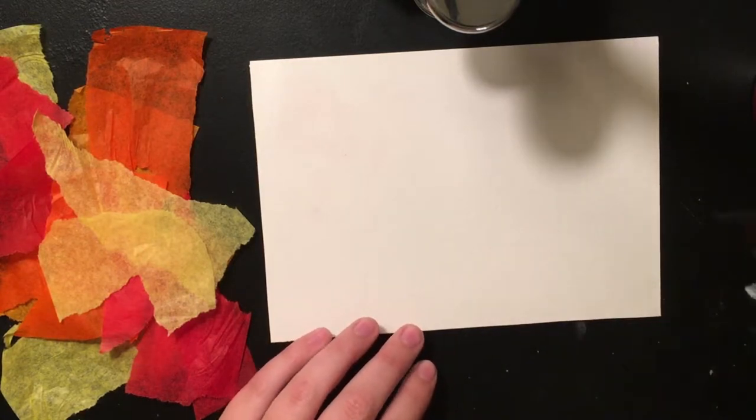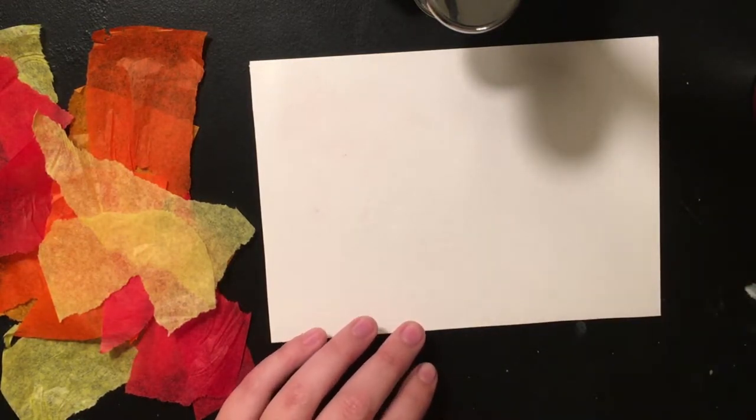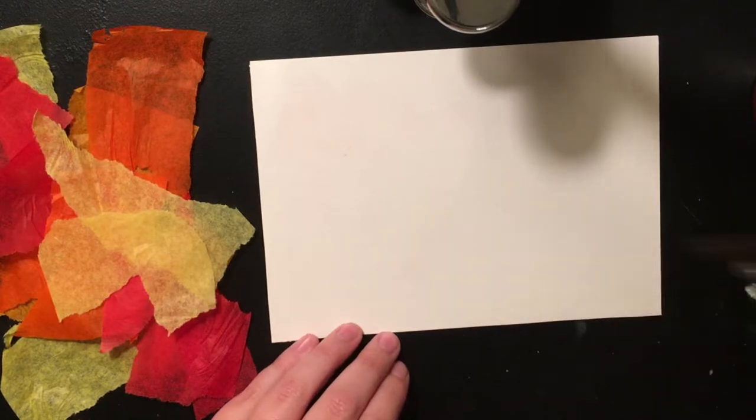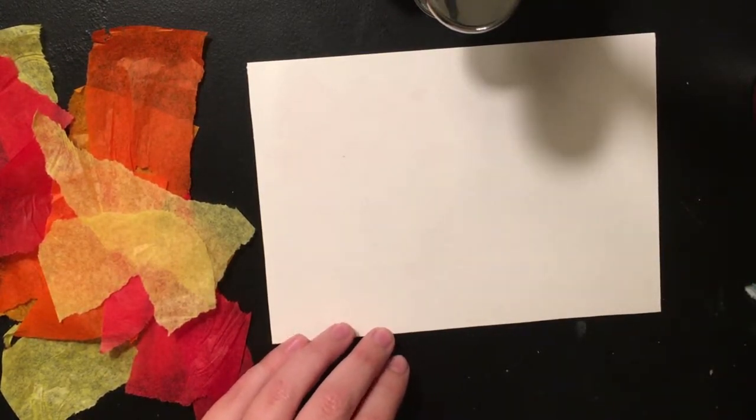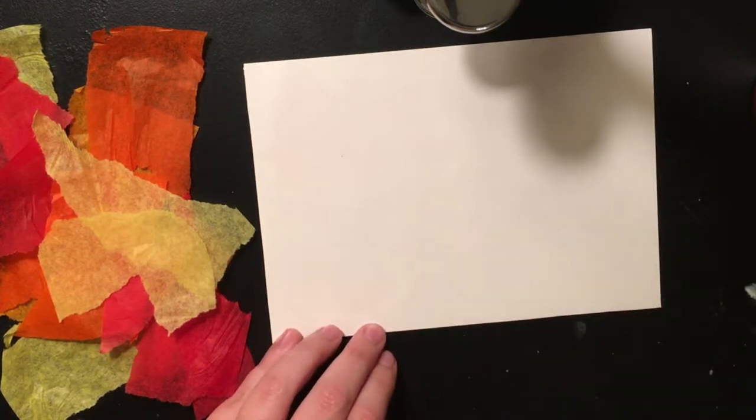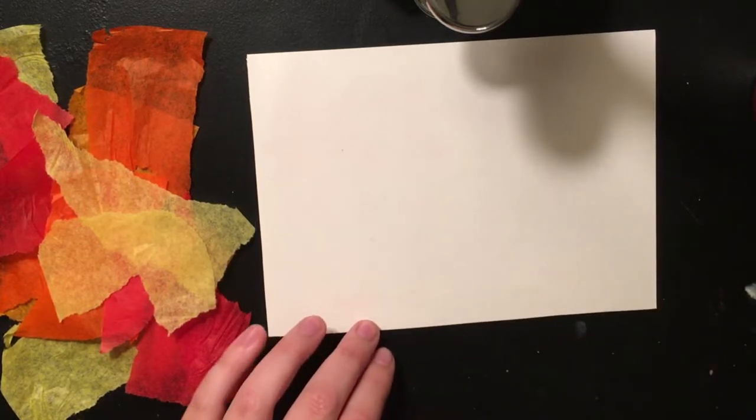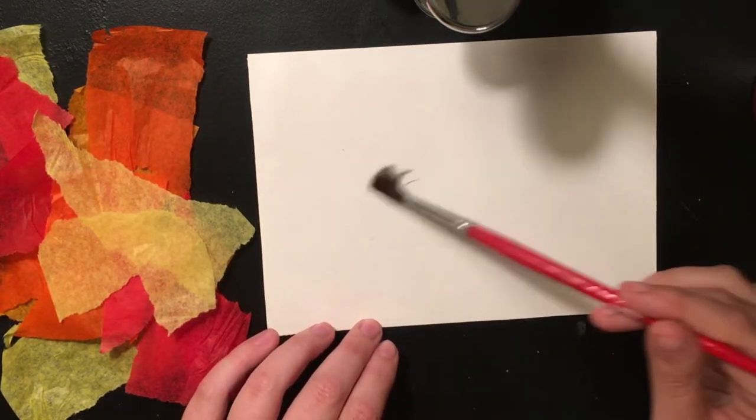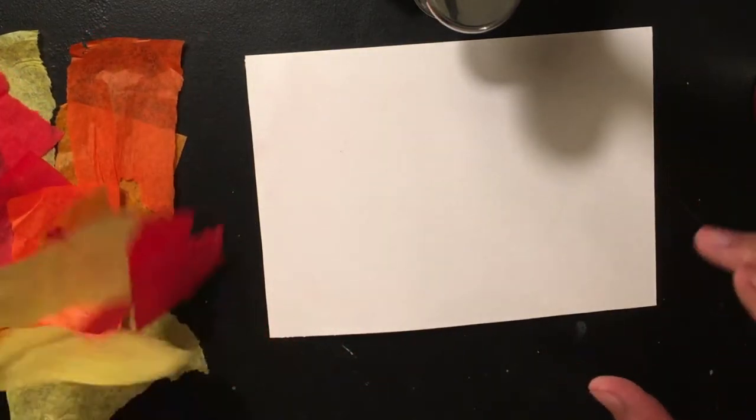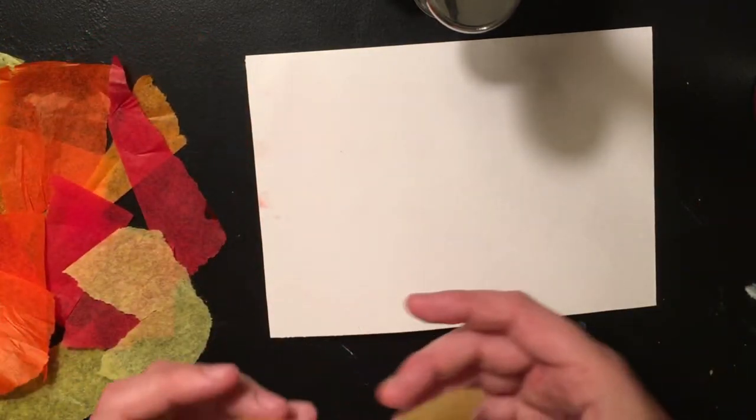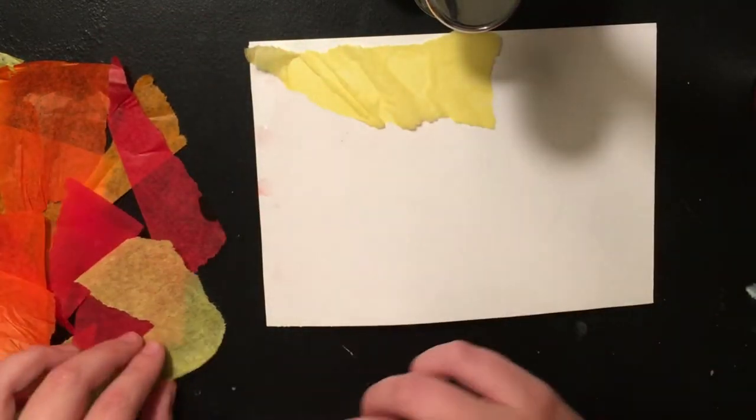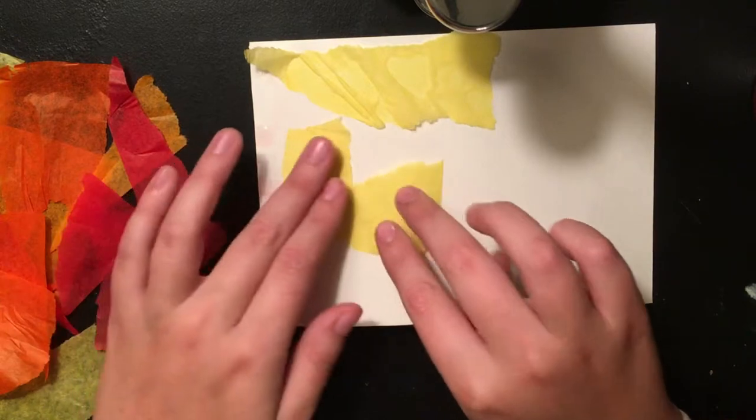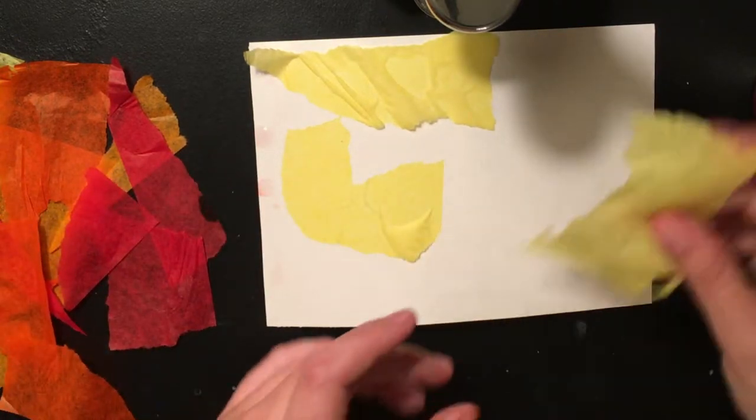You're wetting the page before you're going to be applying any pigment. Spread that all over, and then once you have your page pretty much covered with water, you can always go back and add more. You're going to start laying your tissue paper on top. I'm going to start with yellow, with the warmer or the lighter colors.